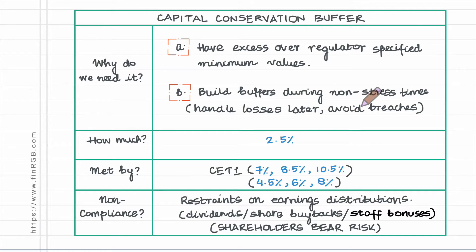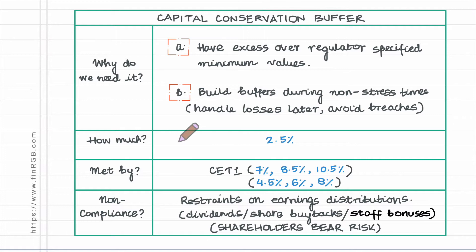In doing so they are able to avoid any breaches with respect to the minimum levels which the regulator has specified. The size of the capital conservation buffer is set to be equal to two and a half percent of the bank's risk weighted assets.